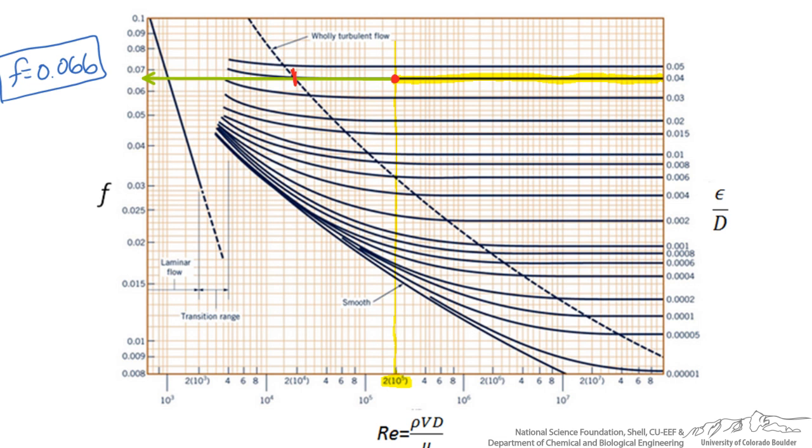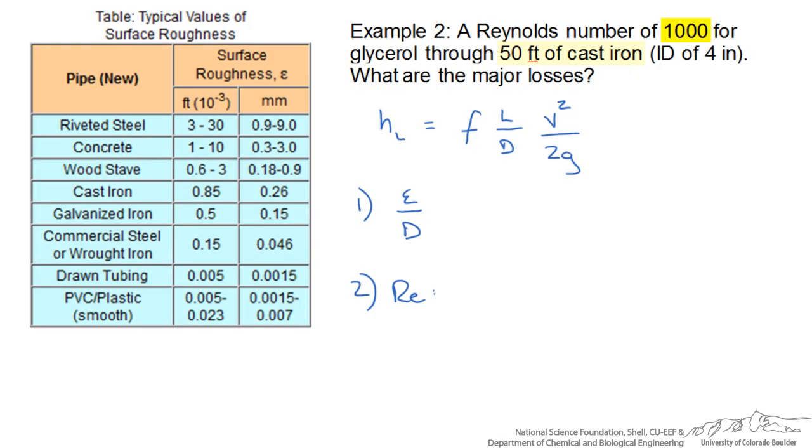Now that is not the case for laminar flow, and we can see that in an example. We have a Reynolds number of 1000 for glycerol through 50 feet of cast iron, given an inner diameter of 4 inches. We are asked to calculate the losses associated with this.